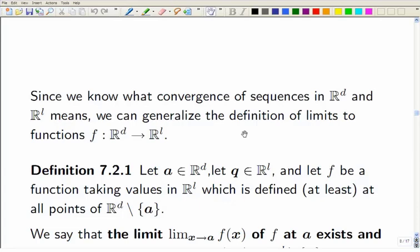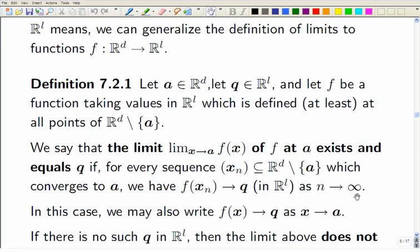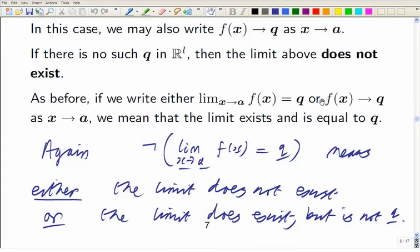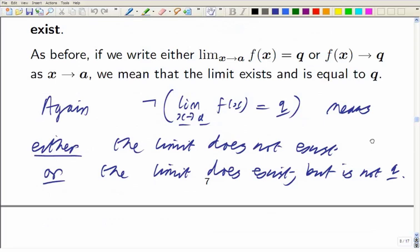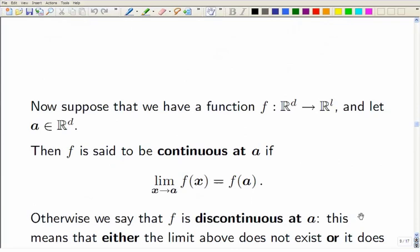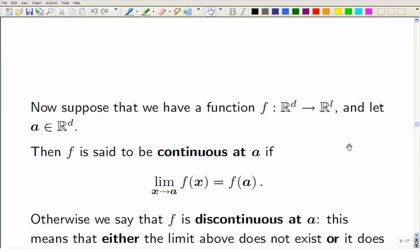Apologies for the technical problems, but my tablet pen is now working again. Where were we? I just told you about the negation, what it meant to not have limit Q as X tends to A. And now, we can look at what it means to be continuous.